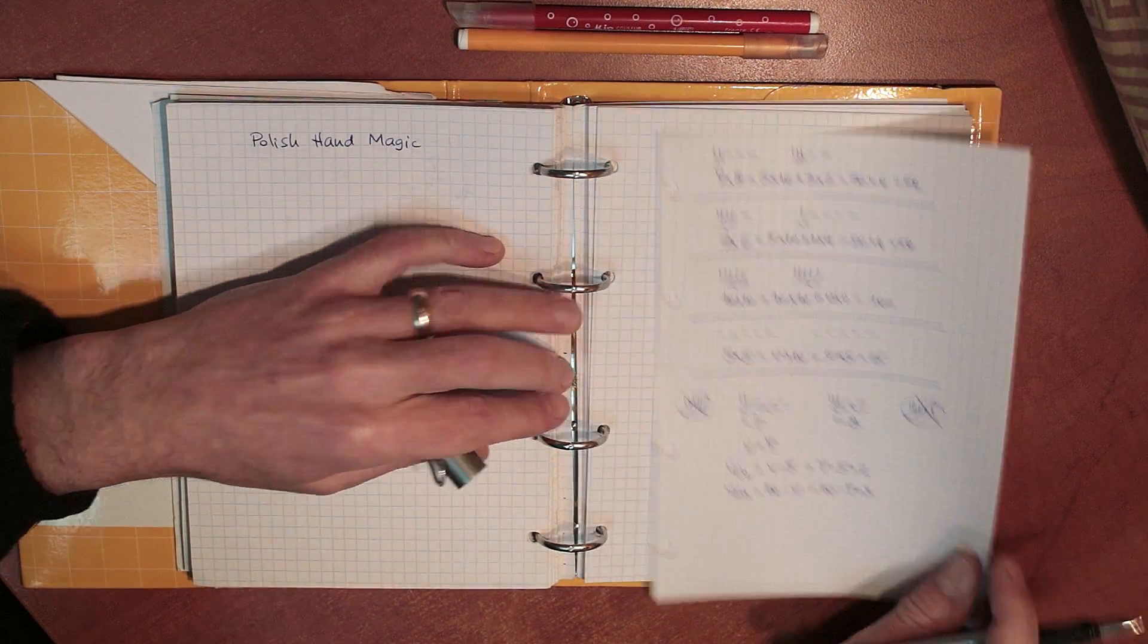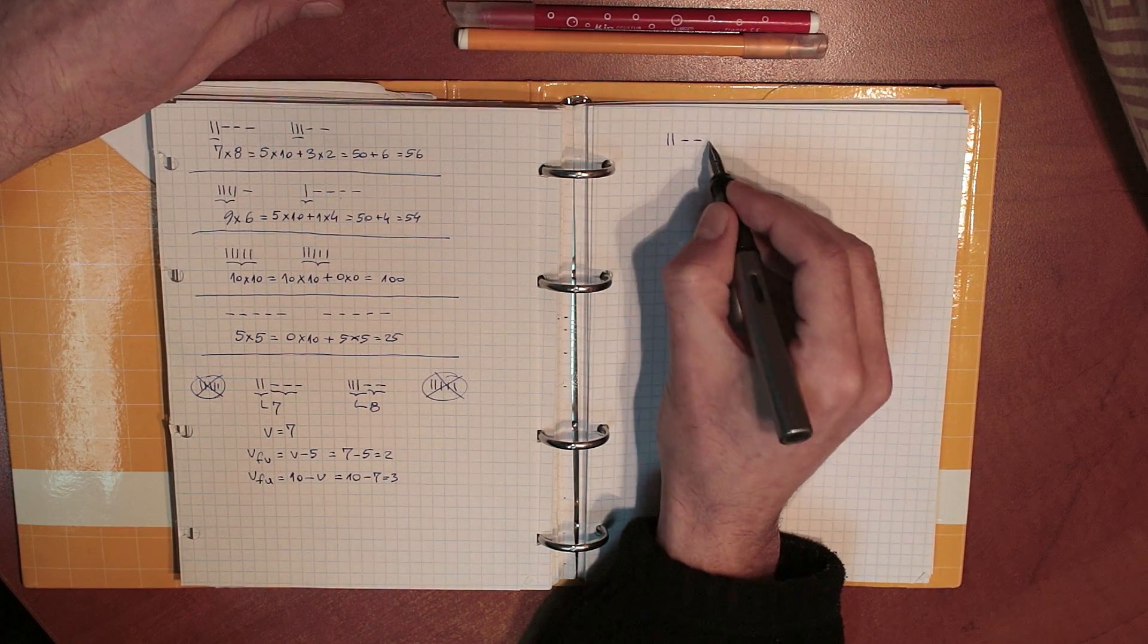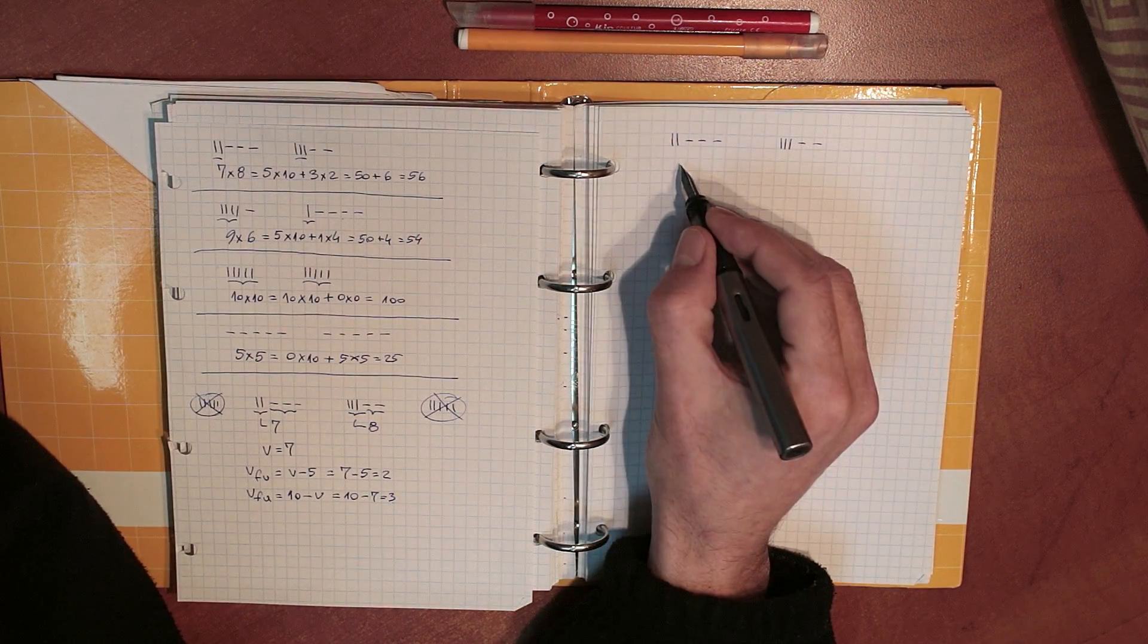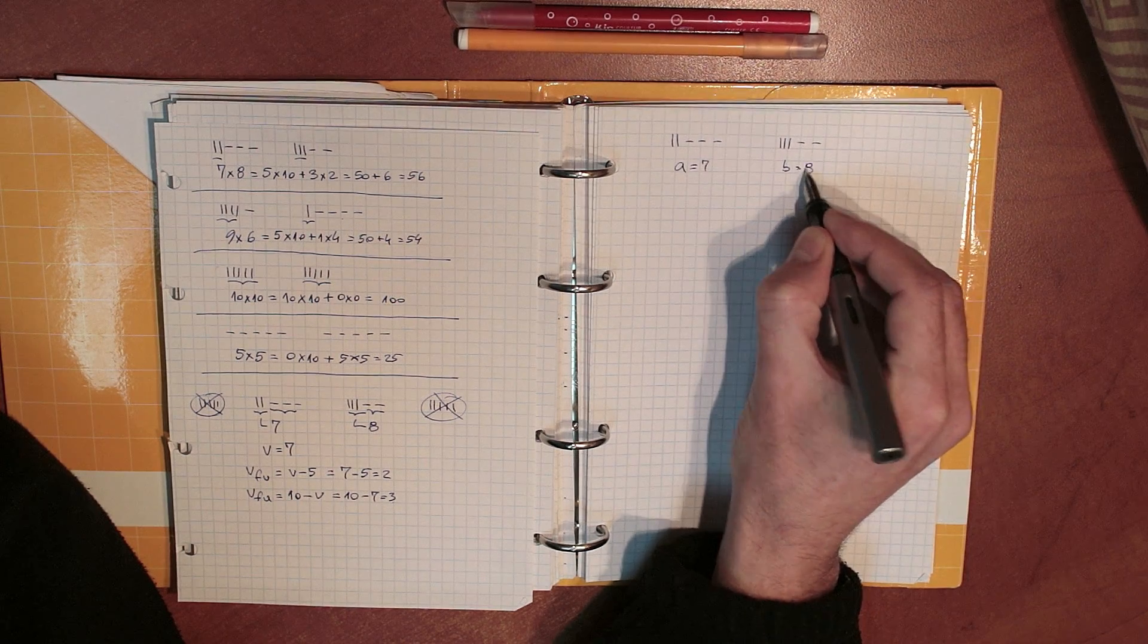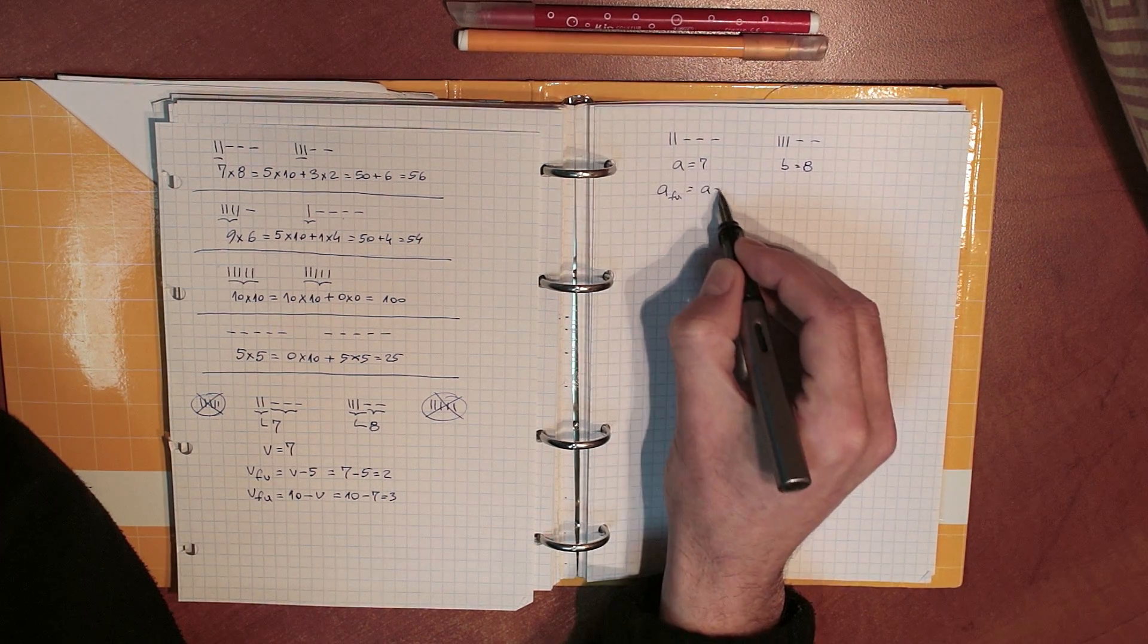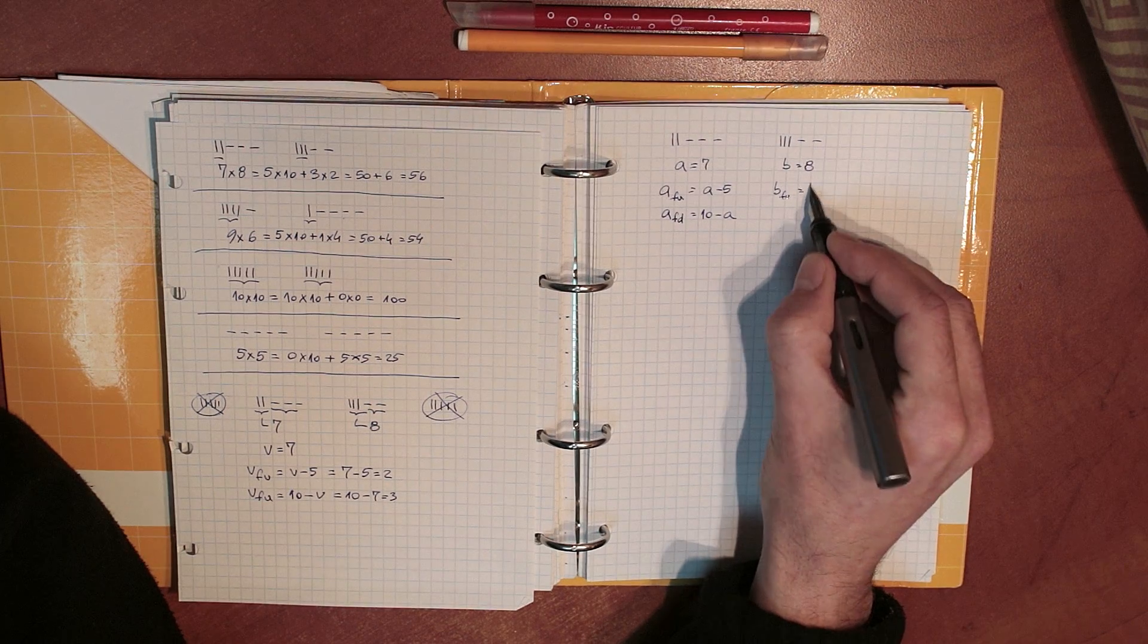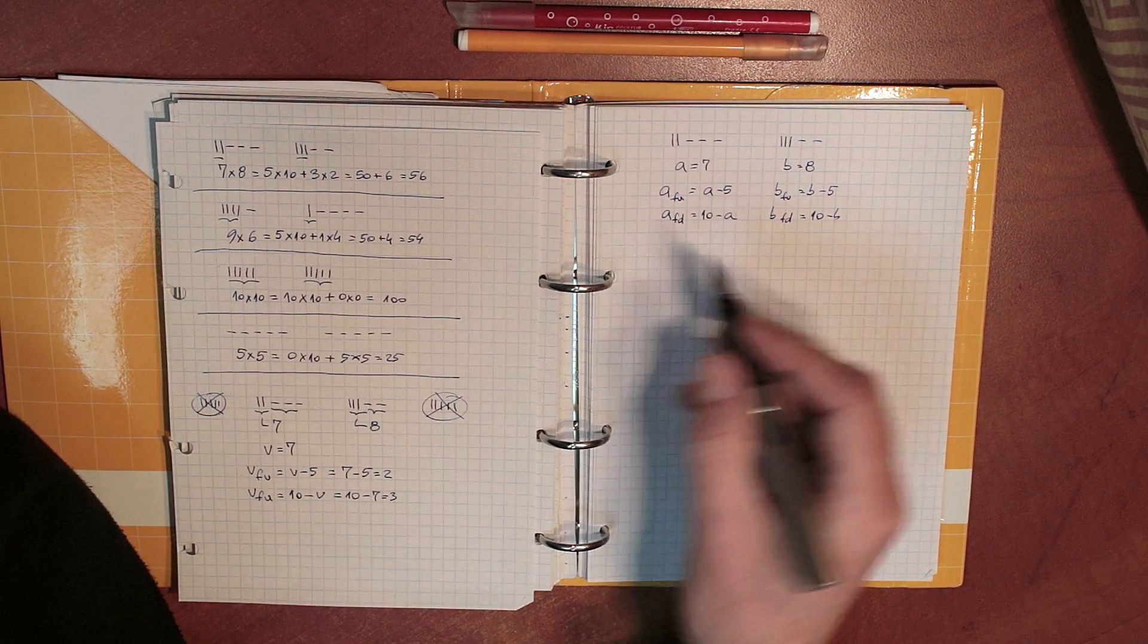So with that in mind, let's see what happens when I'm actually working out this example. So once again, let's take the 7 times 8 example. We're not actually using this, but I want you to see, to have a parallel representation of actual values and algebraic form. So if my A, the value for my left hand is 7, and my B is 8, right? Then the number of fingers up on my left hand will be A minus 5, and the number of fingers down on my left hand will be 10 minus A, and on the right hand it's the same. The number of fingers up is B minus 5, and the number of fingers down is 10 minus B. So what did I do next, actually, with these values?